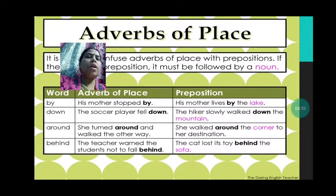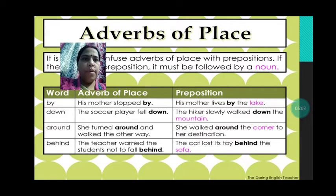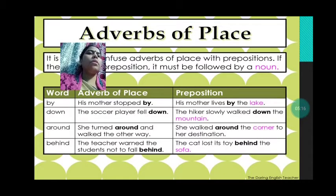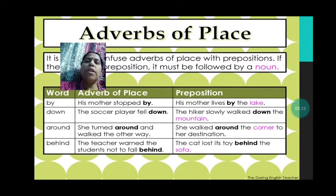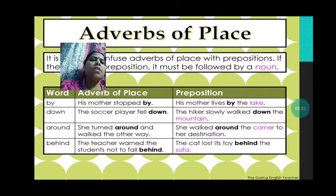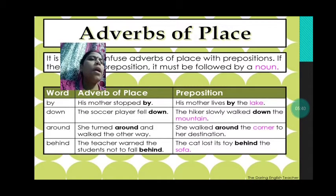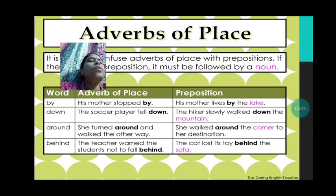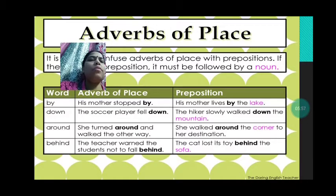Then: 'She turned around and walked the other way.' Now, 'She walked around the corner to her destination.' In the first sentence, 'around' is adverb of place. In the second, 'around' is a preposition because it is followed by the noun 'the corner'. The teacher warned the students not to fall behind — 'behind' is adverb of place. But 'the cat lost its toy behind the sofa' — here 'behind' becomes a preposition because it is followed by the noun 'sofa'.